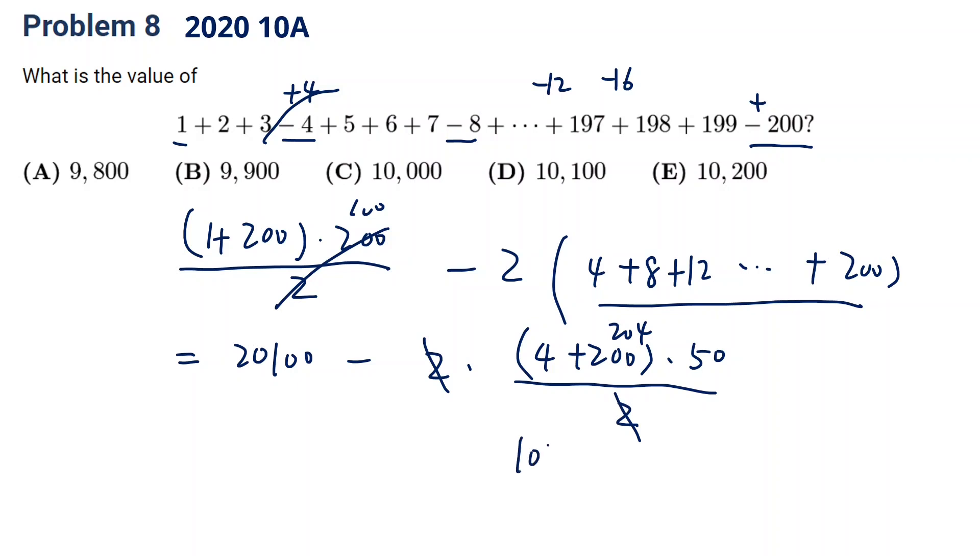So 2 and 2 cancel. This is 204 times 50, which will be 10,200. Okay. And then do the minus. We will get 9,900. This will be our answer.